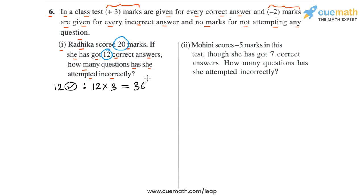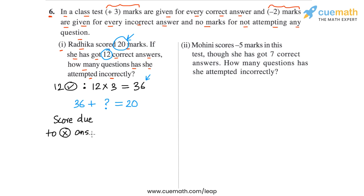Observe this carefully. She gets 36 marks for her correct answers, but she obtained a total of only 20 marks. Why? She must have answered some questions incorrectly, for which she got negative marks. So the marks from correct answers plus the marks from incorrect answers together give us 20. From this relation, the score due to incorrect answers is 20 minus 36, which equals minus 16. So Radhika obtained minus 16 marks because of her incorrect answers, and 36 plus (minus 16) gives the total score of 20.